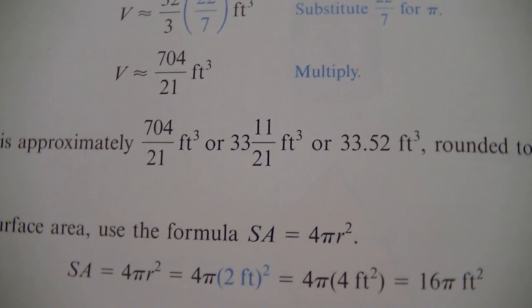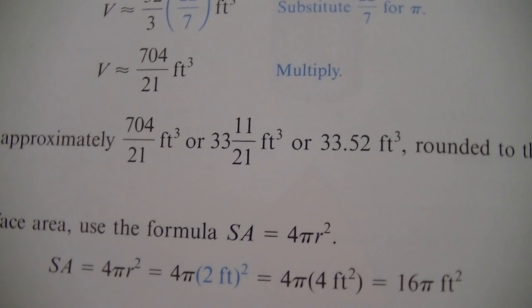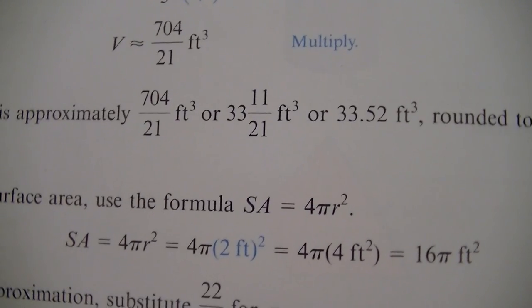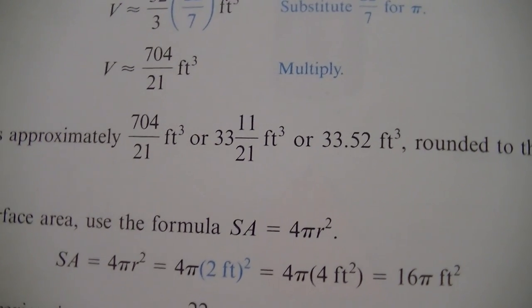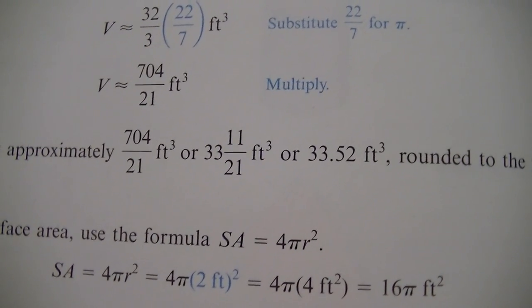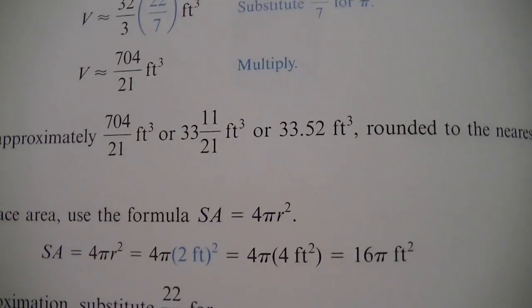So that's how they get it 33.52. And if you wanted to just kind of approximate that in your head, if you round 11 to 10 and 21 to 20, 10 is about half of 20. So that point five is about right if we just did it in our head like that. So those numbers look good. Now, surface area, we've got a different formula.